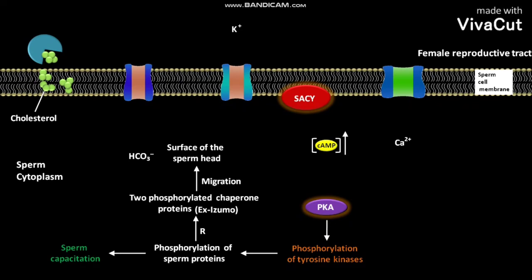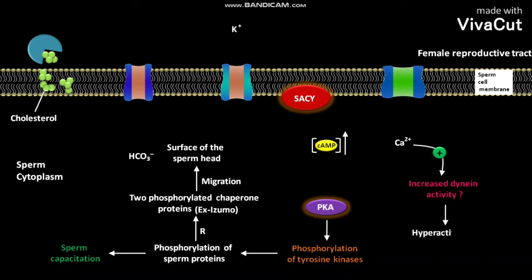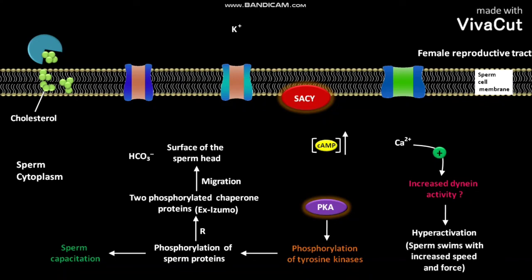The calcium ion also causes increased dynein activity. The increased dynein activity causes hyperactivation of the sperm, and due to this hyperactivation, the sperm swims with increased speed and force. The phosphorylation of tyrosine kinases also contributes to hyperactivation of the sperm.